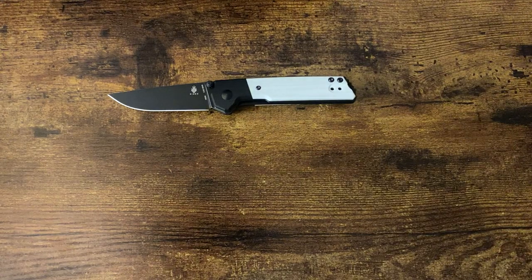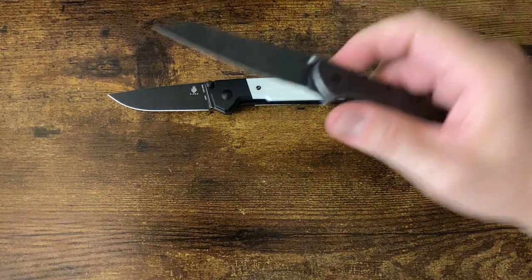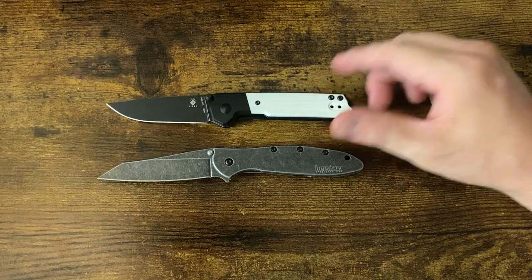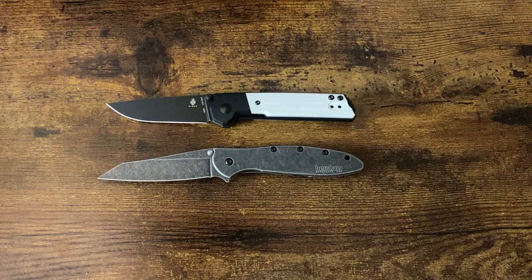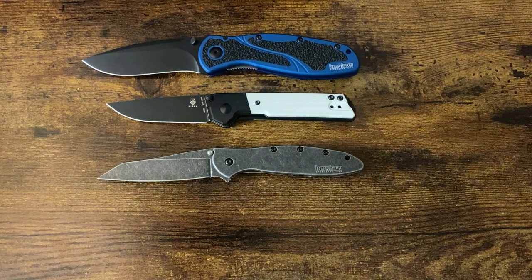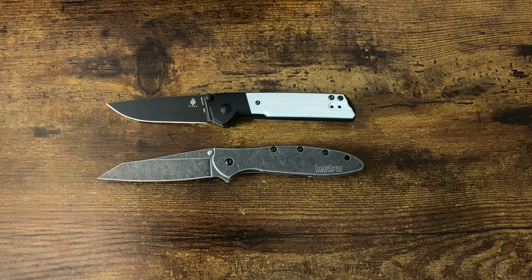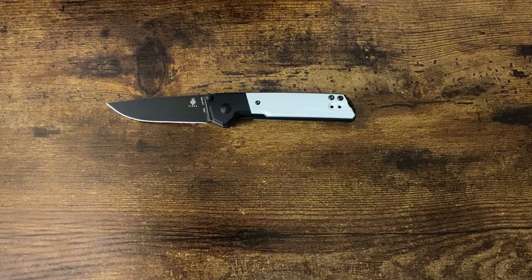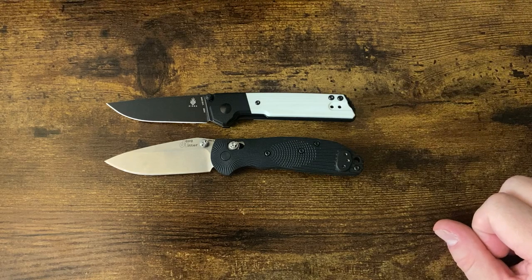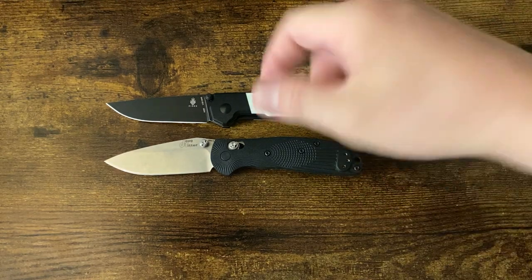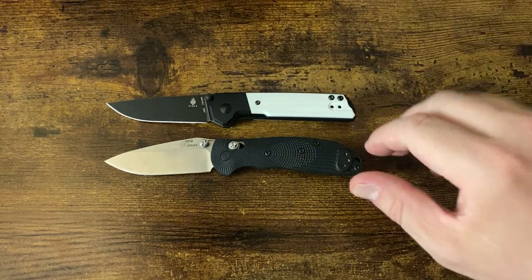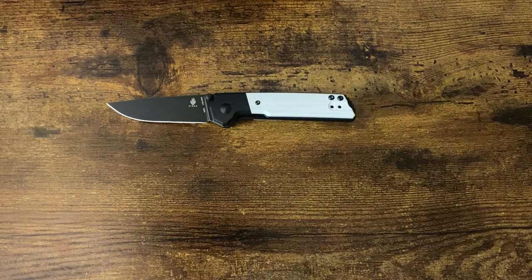We'll do a little comparison. First up, this is a random Leak. As you can see, it is slightly smaller than the random Leak there. Another one, just for comparison purposes, is the Kershaw Blur. As you can see, it is much smaller than the Blur. It is really close in size to the Ritter Hogue, the Mini Hogue. It is right there with it.